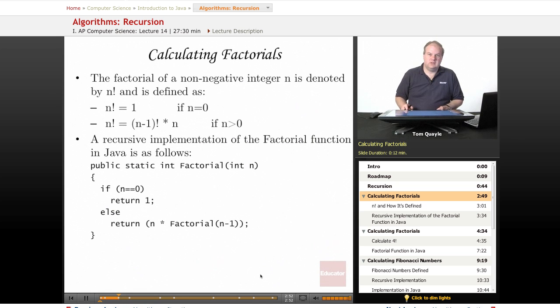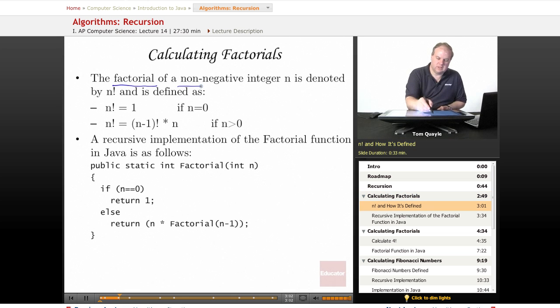One of the classic examples of a recursive method or a recursive function is calculating factorials. The factorial of a non-negative integer is denoted by an exclamation point after the number and is defined as follows: if n equals zero, then n factorial, meaning zero factorial, is defined as one. Otherwise, for all n greater than zero, n factorial is defined as n minus one factorial times n.